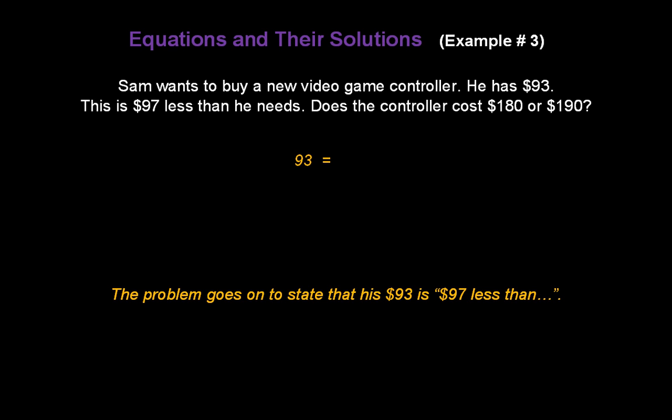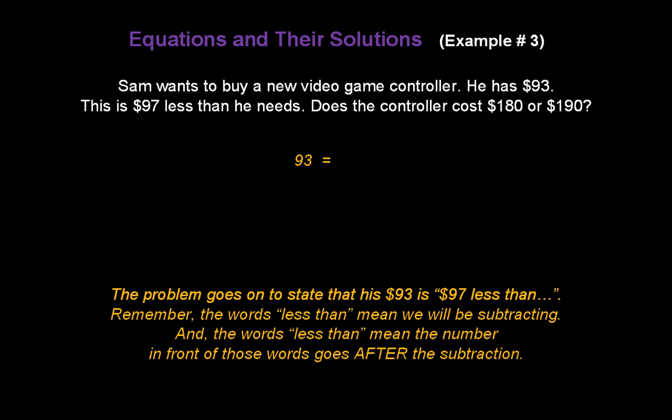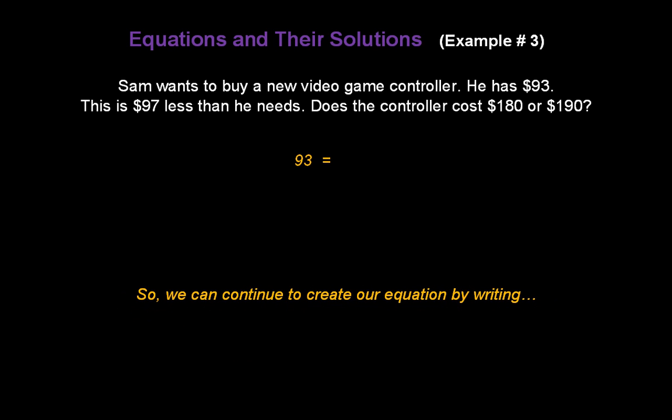Now, the problem goes on to state that his $93 is $97 less than. Remember, the words less than mean we will be subtracting. And the words less than mean the number in front of those words goes after the subtraction. So we can continue to create our equation by writing minus $97.